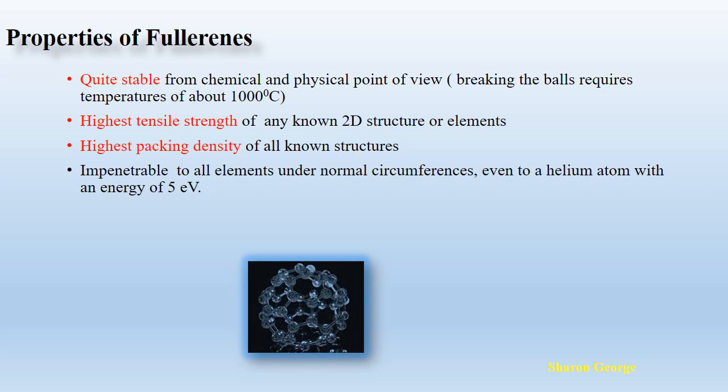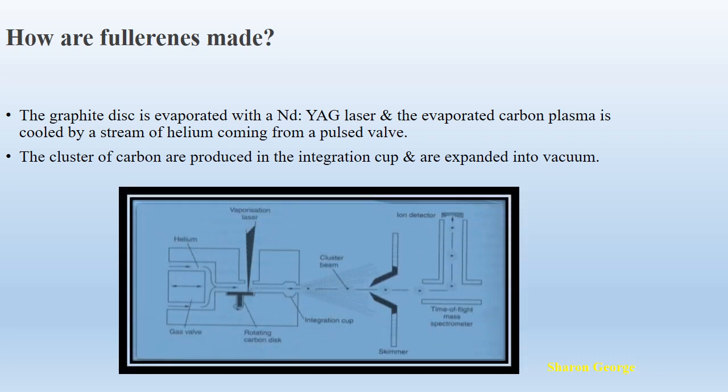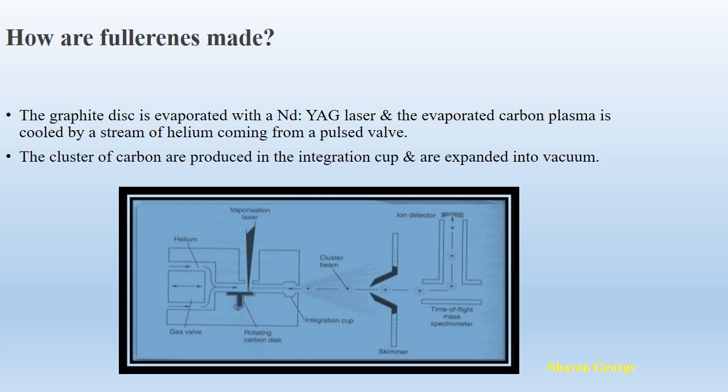Next we will discuss how we can make this structure. Similar to carbon nanotubes, fullerenes can also be synthesized using the laser ablation method. An Nd:YAG laser is used to evaporate the carbon present in the graphite electrode. The carbon plasma is generated, and that evaporated carbon plasma is then cooled by a stream of helium. Finally, at the collection cup, the fullerene structures are formed.